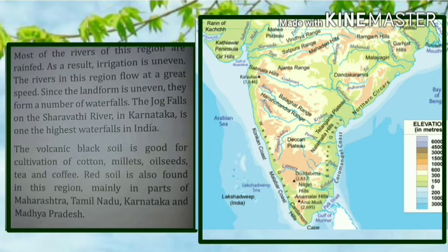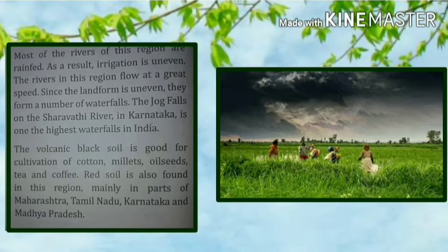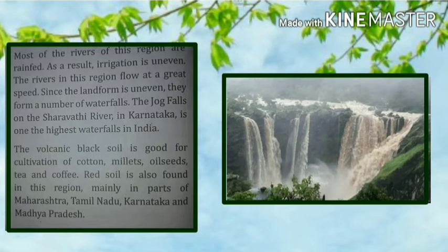Most of the rivers of this region are rainfall-dependent, which means they depend on rainwater. As a result, irrigation is uneven. The rivers in this region flow at great speed since the landform is uneven, causing them to form a number of waterfalls. The Jog Falls on the Sharavathi River in Karnataka is one of the highest waterfalls in India.